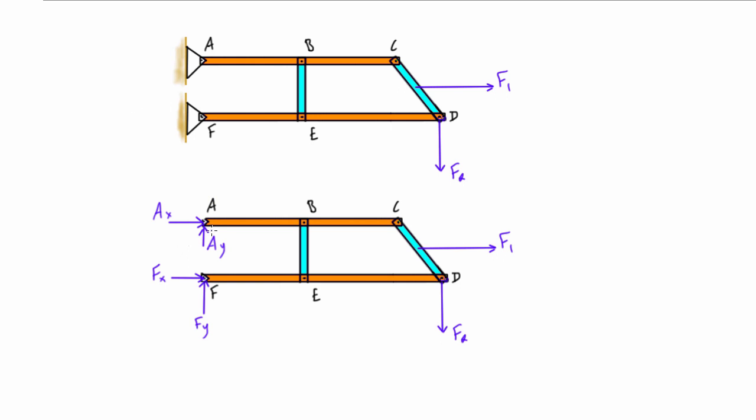And actually if we notice, if we did consider this as a whole object, we have three equations to work with for the whole object and we actually have four unknowns. So AX, AY, FX, and FY. So as an entire solid object, this would be statically indeterminate.